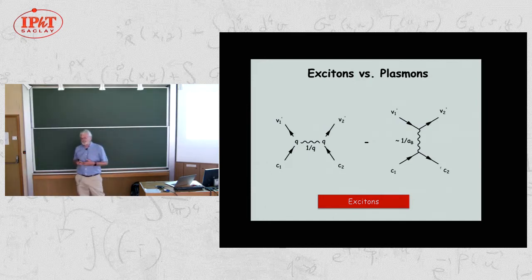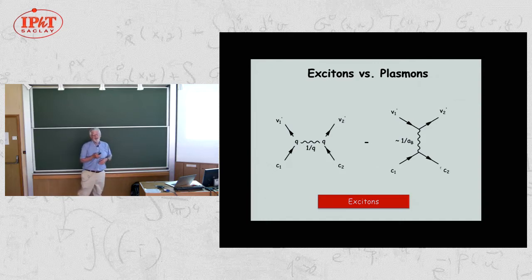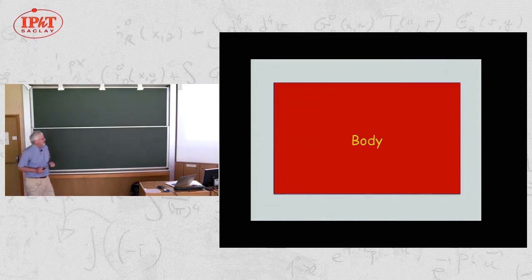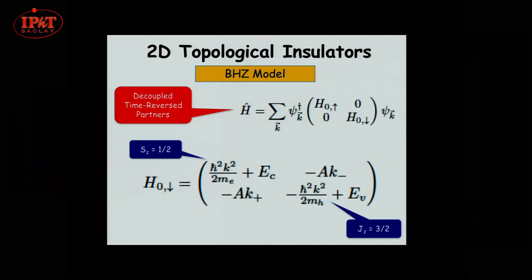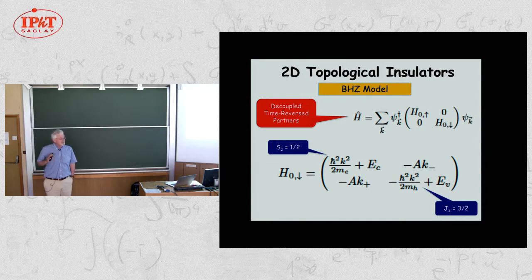Collective modes called plasmons emerge above the particle-hole continuum due to repulsive interactions among intra-band particle-hole excitations, whereas for inter-band particle-hole excitations, attractive interactions dominate and a collective mode appears below the particle-hole continuum — that's what we call excitons. When I have a narrow gap system, I have both intra-band and inter-band particle-hole fluctuations going on at the same time, and all of these have to be incorporated appropriately.